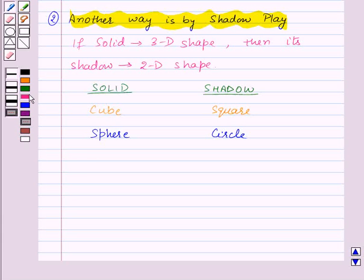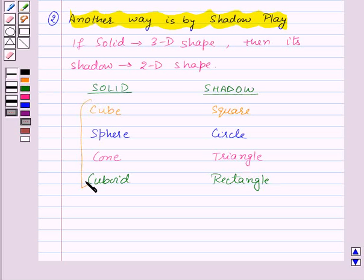Now if we have an ice cream cone, then the shadow of the cone will be a triangle. And if we place any cuboid box, then its shadow will be a rectangle. Here all the solids are 3D shapes and their shadows are 2D shapes. So by using shadow play, three-dimensional objects can be viewed in two dimensions.